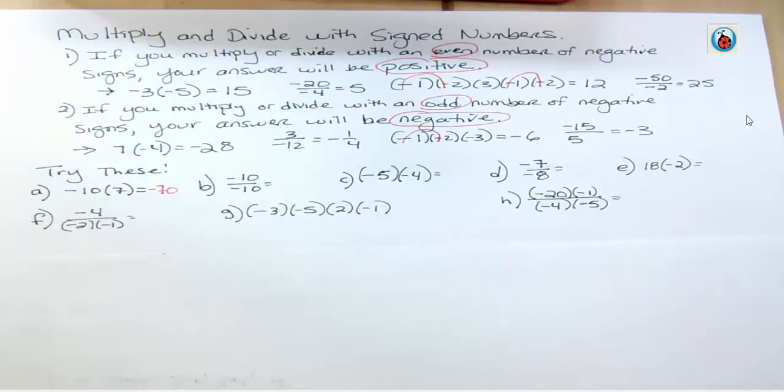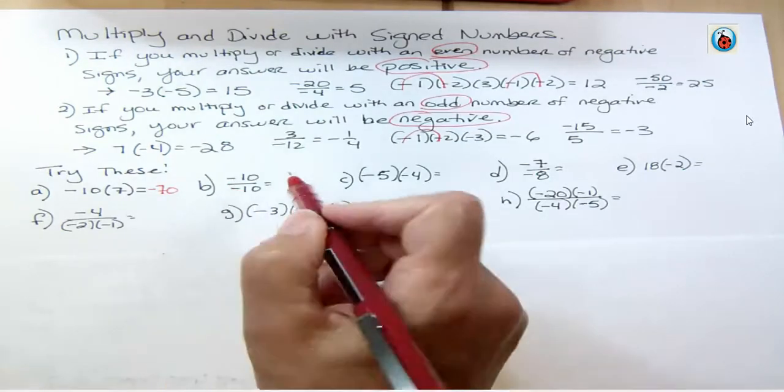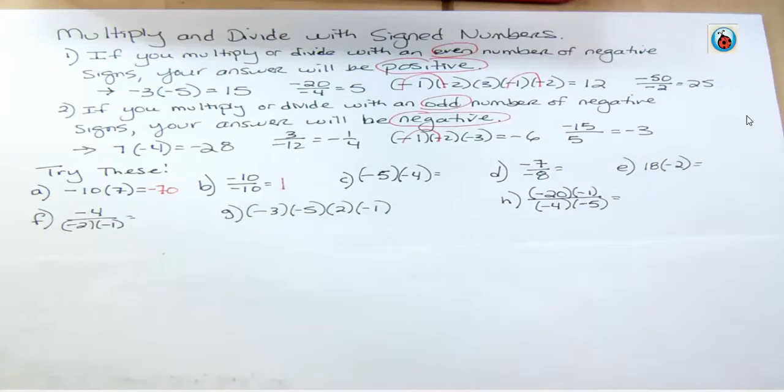For the second one, anything divided by itself is always 1. It's always positive 1. Here we can see we have two negatives, which make a positive. And 10 over 10 is 1. That would be a positive number.